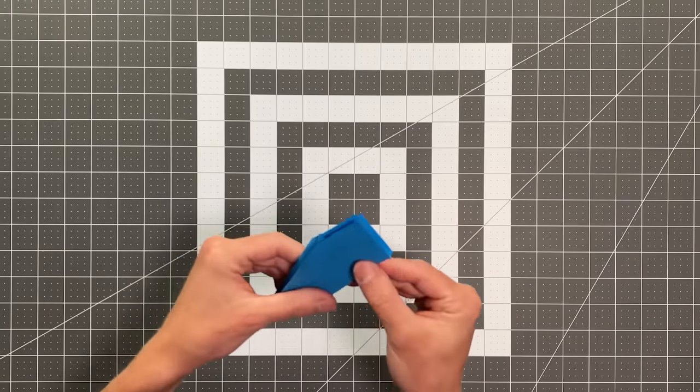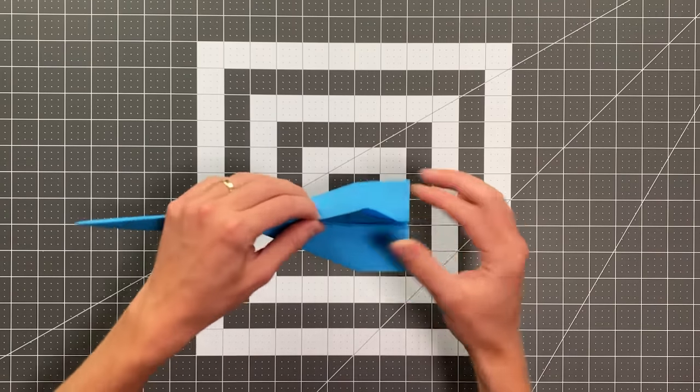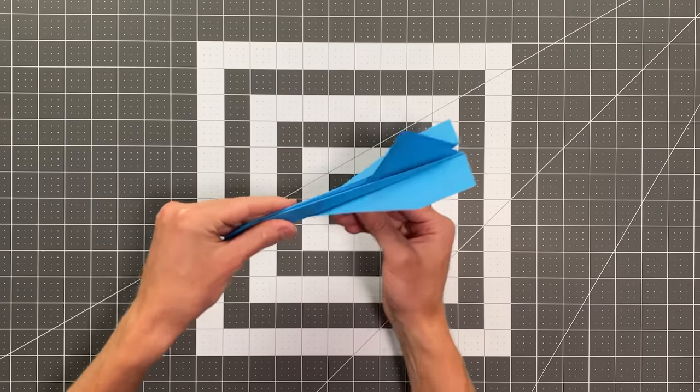So when I close this all up, really reassert those creases. You can see that fin stands up right in the middle just like that. And there you go. This is a finished Concord.